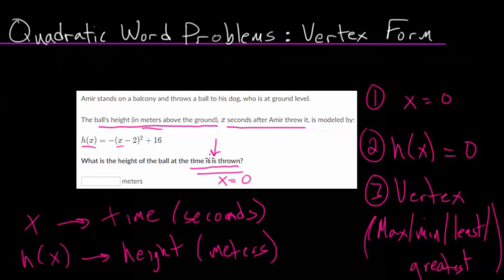So with this problem, we know we want the height. So we're trying to find h of x, notice that the units are meters, which is the units for our height. And we know that we're looking for that height when the ball is thrown. So when x is equal to zero.